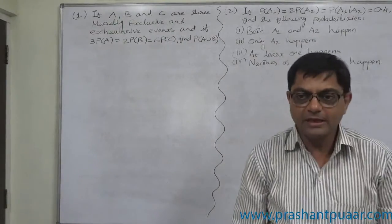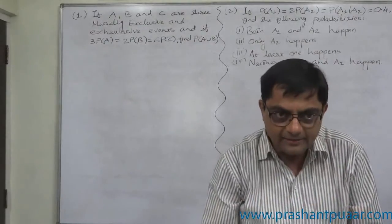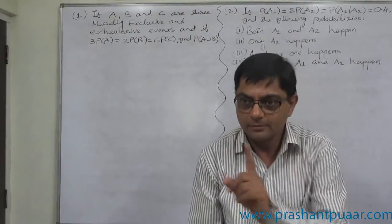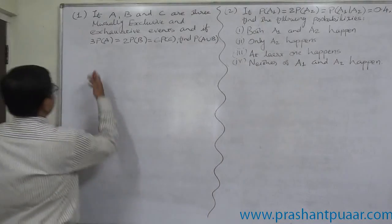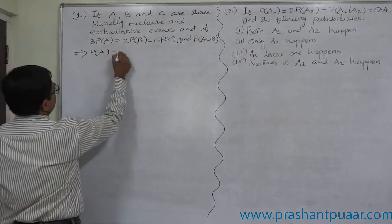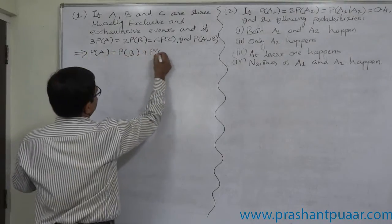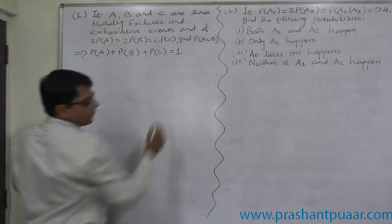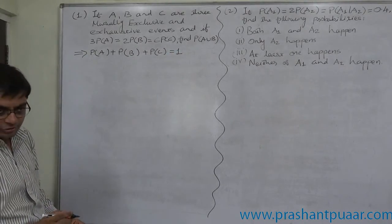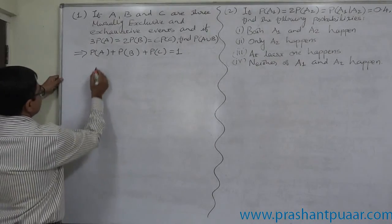If the events are mutually exclusive and exhaustive, then the summation of their probabilities should be 1. That means P of A plus P of B plus P of C equals 1, because A, B and C are 3 mutually exclusive and exhaustive events.